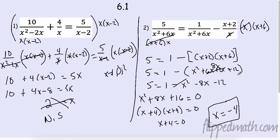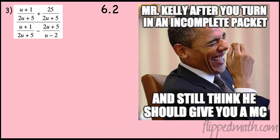Is that an excluded value? No — our excluded values this time would be 0 and negative 6. So x equals negative 4 will work. This happens all the time — you guys turn in packets and it's not done but you still think you should get a check mark. It cracks me up.